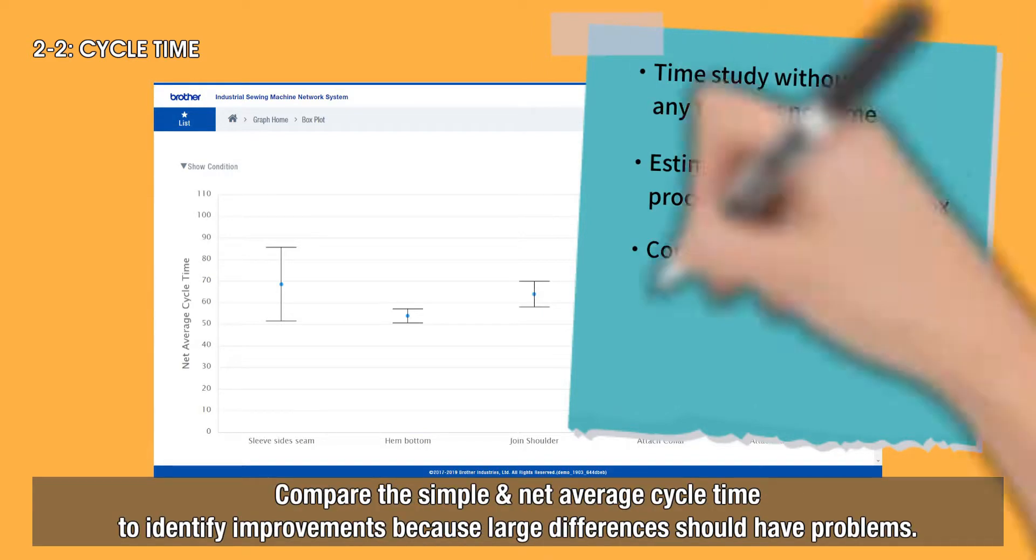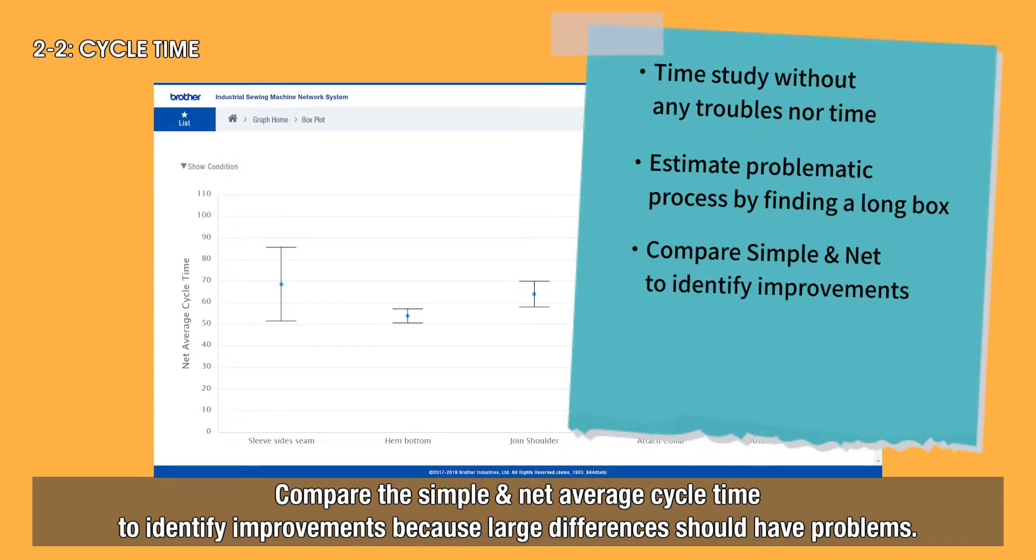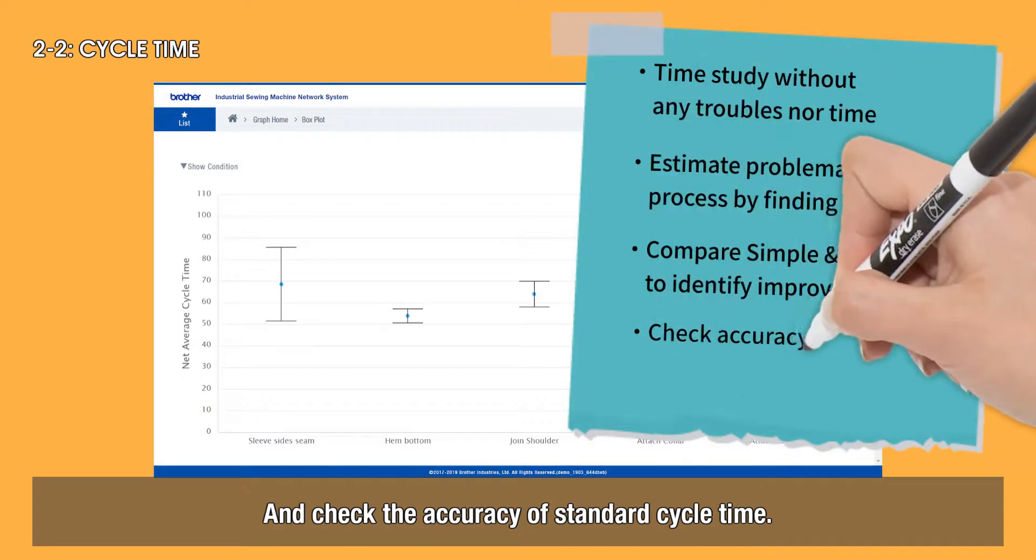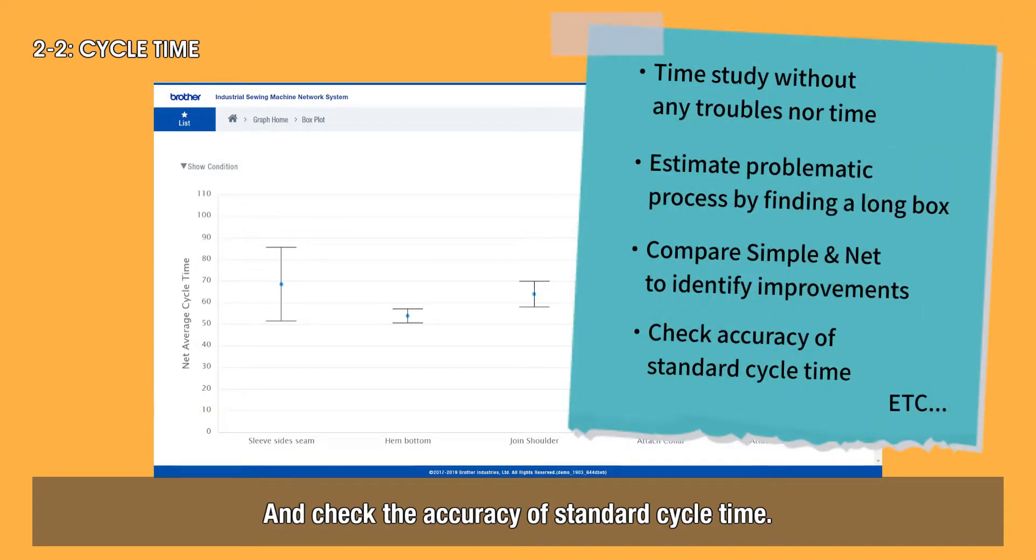Compare the simple and net average cycle time to identify improvements because large differences should have problems. And check the accuracy of standard cycle time, etc.